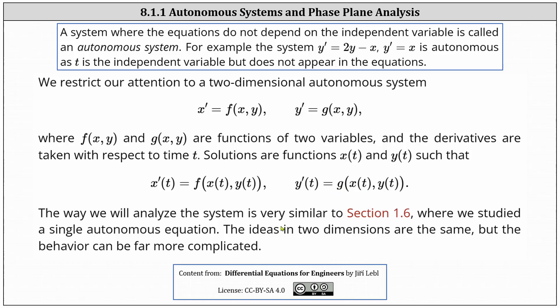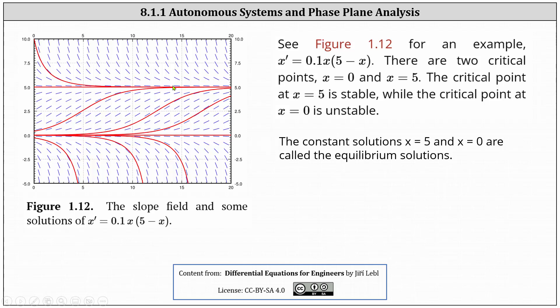The way we will analyze the system is very similar to section 1.6, where we studied a single autonomous equation. The ideas in two dimensions are the same, but the behavior can be far more complicated. Let's take a quick look back at section 1.6. On the left, we have the slope field and some solutions to the autonomous equation x' = 0.1x(5-x). Analyzing the slope field, notice there are two critical points, one at x = 0, another at x = 5.